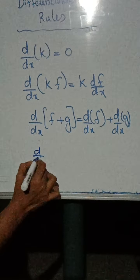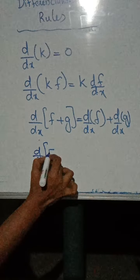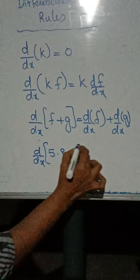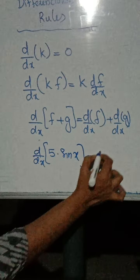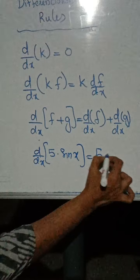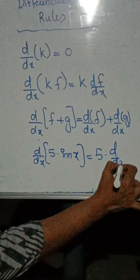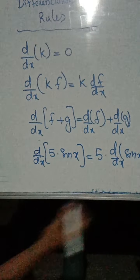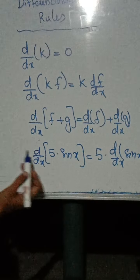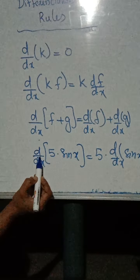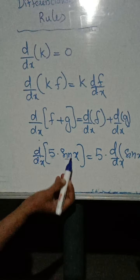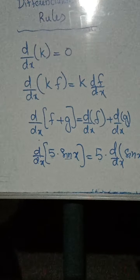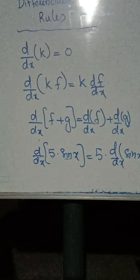For example, d by dx of 5 sin x is equal to 5 into the derivative of sin x. That is, the derivative of a constant into a function equals the constant into the derivative of the function.